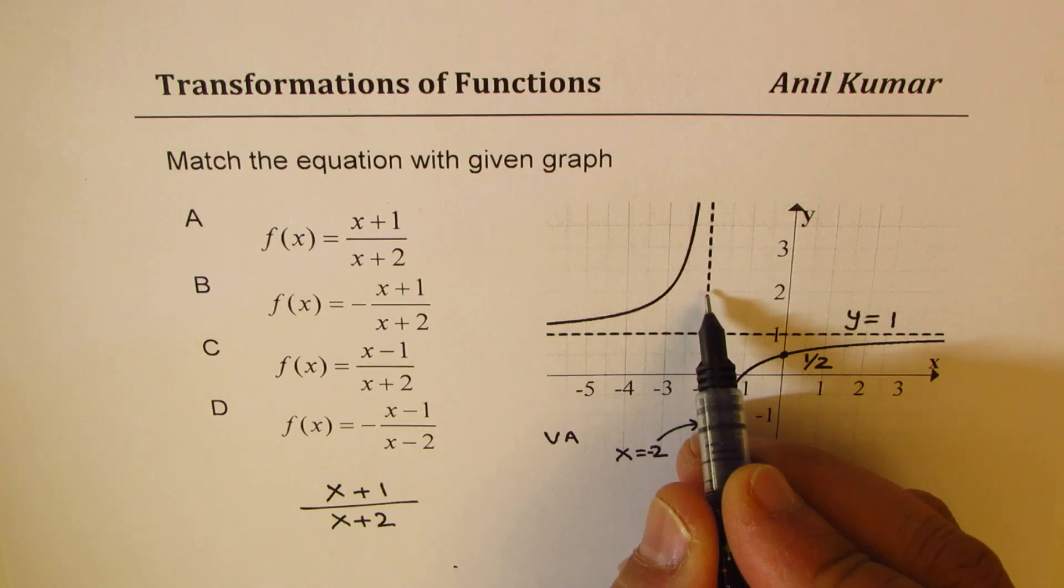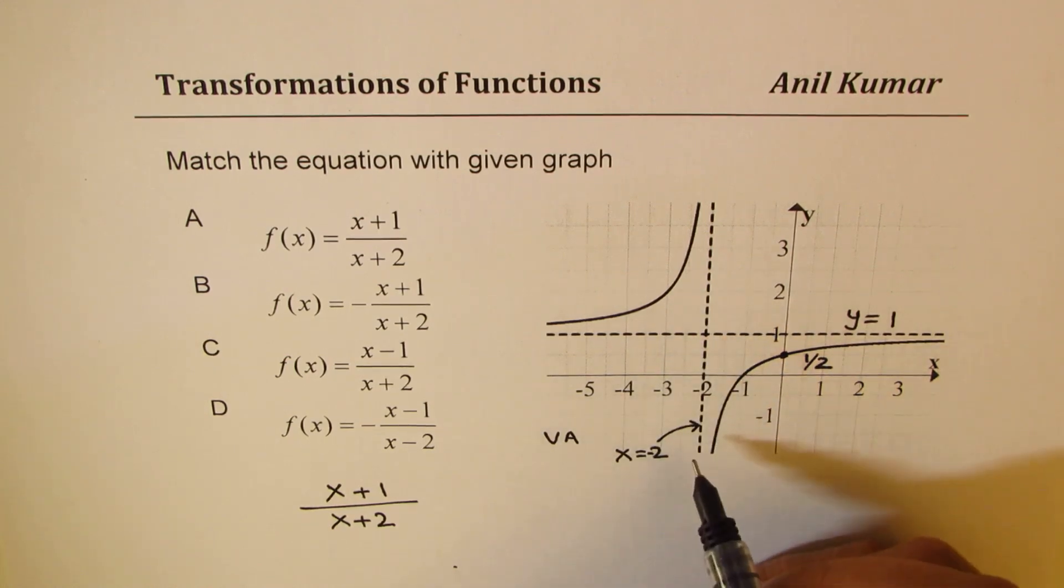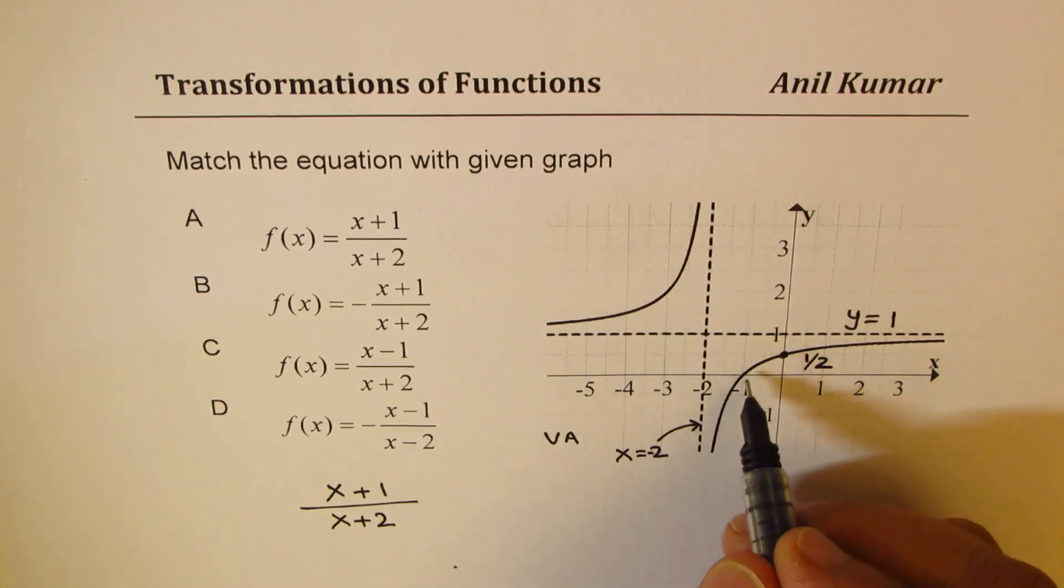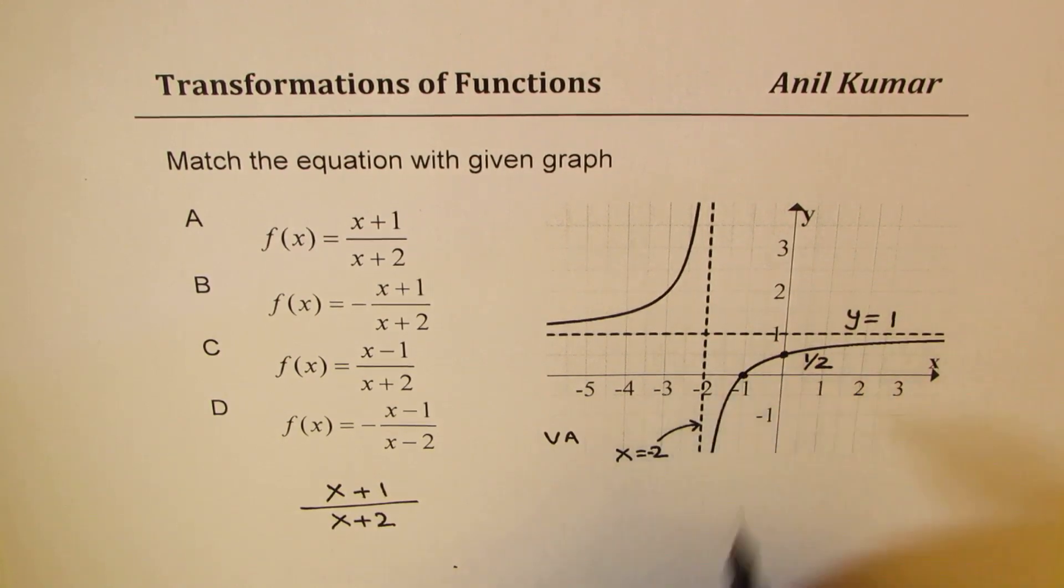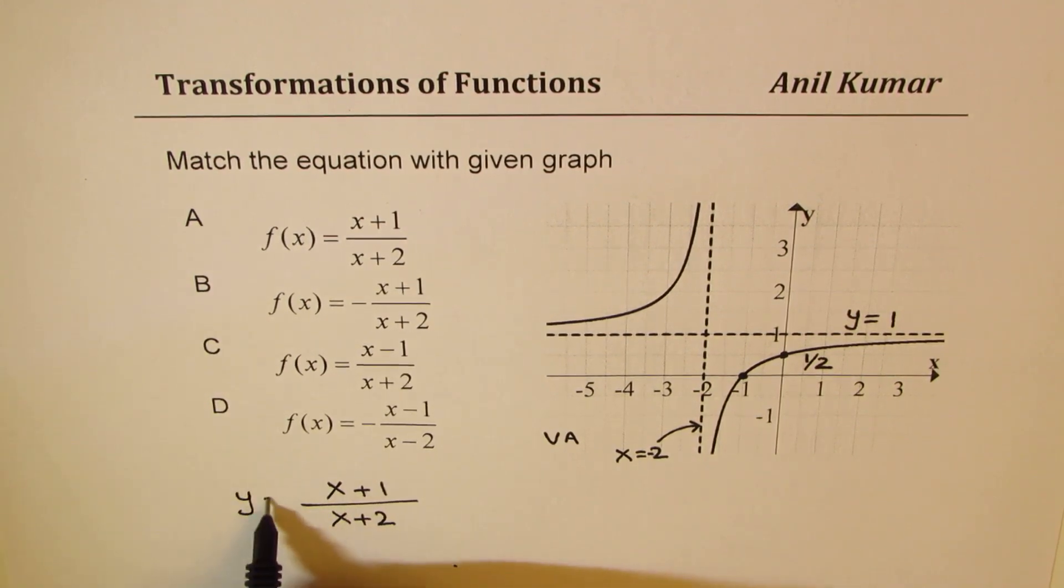One more important point to check is one unit away from the point where the two asymptotes meet, so the value at x = -1. At x = -1, we have y = 0. So if I substitute -1, I do get y = 0.